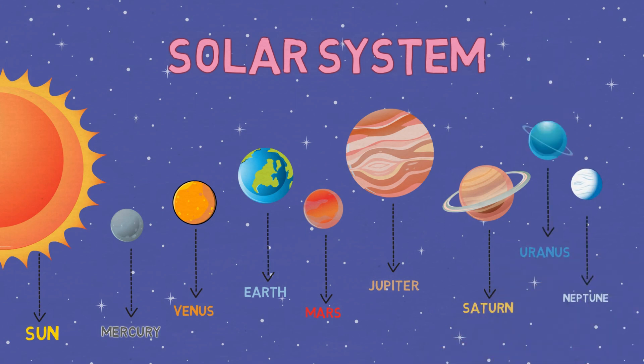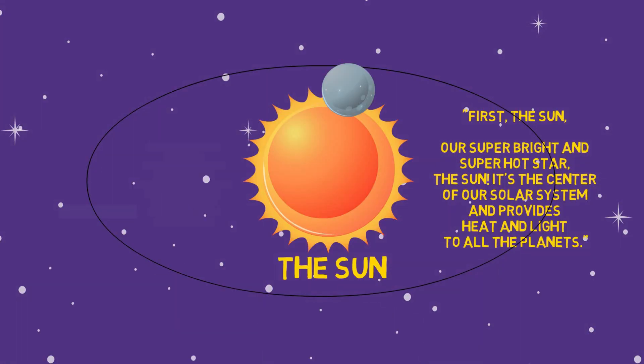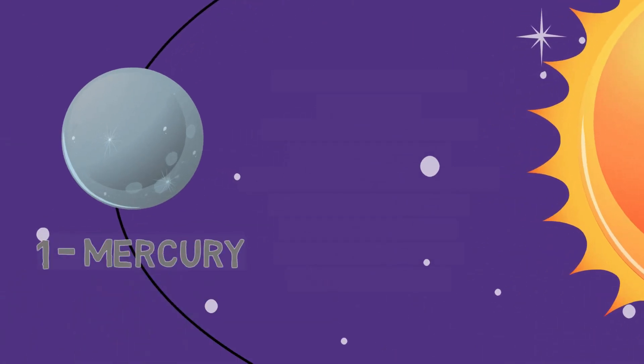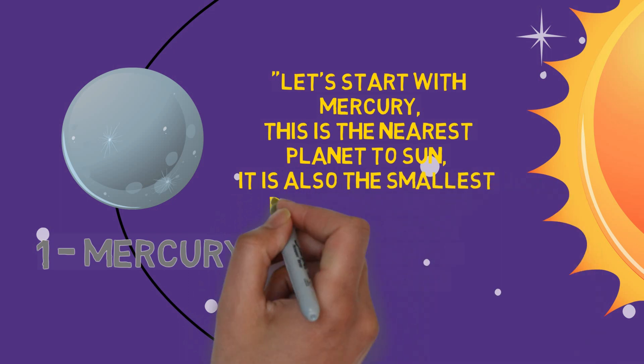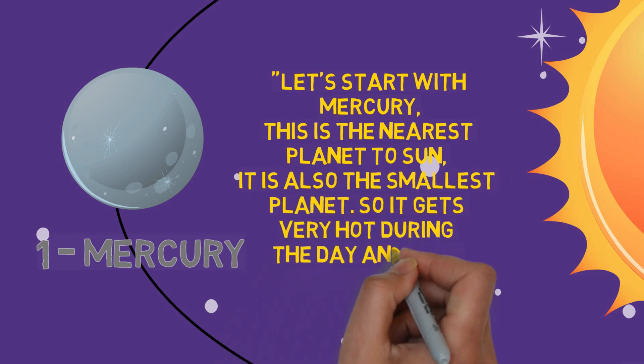Let's start with Mercury. This is the nearest planet to the sun. It is also the smallest planet, so it gets very hot during the day and very cold at night.